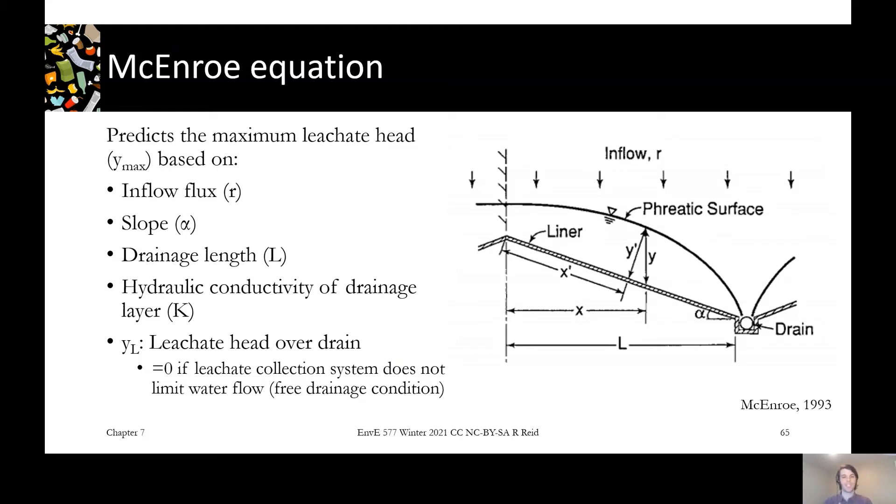There's a paper by a person named McEnroe that describes the shape of this mound based on a whole bunch of factors. Those include the inflow flux, the amount of leachate making its way down through the waste, which on average would be the same as the infiltration rate through the final cover. There's the slope of that system, the drainage length, and the hydraulic conductivity of that drainage layer.